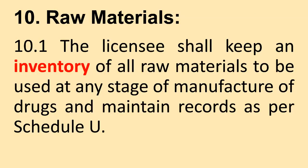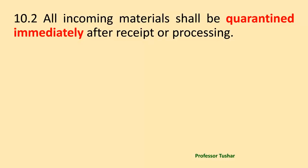Section 10 — Raw Materials. The licensee shall keep an inventory of all raw materials to be used at any stage of manufacture of drugs and maintain records as per Schedule U. All incoming materials shall be quarantined immediately after receipt or processing.